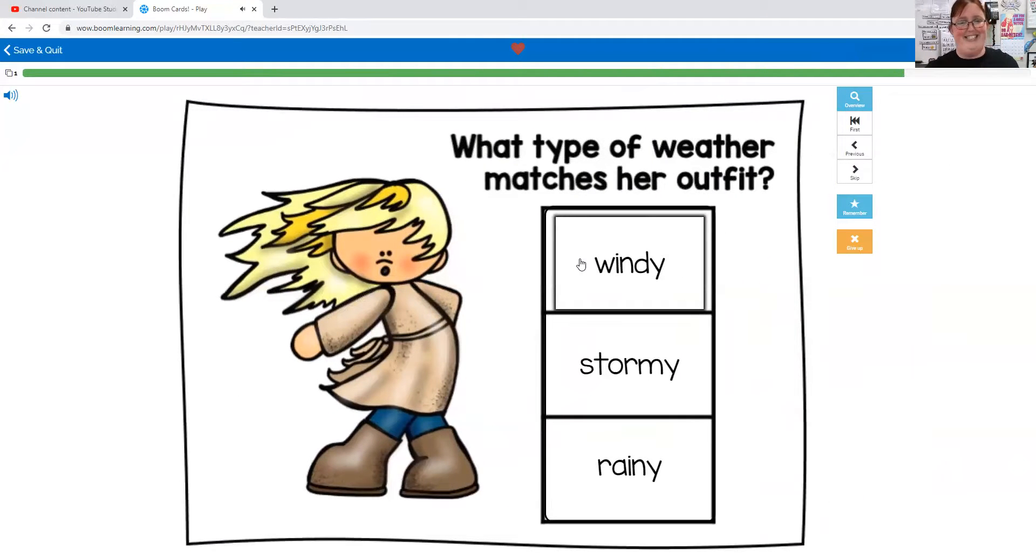What type of weather matches her outfit? Hmm. Windy, stormy, or rainy? Well, her jacket and her hair are all blown to the side, so that means it's probably really windy.